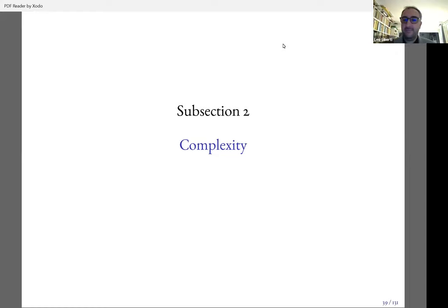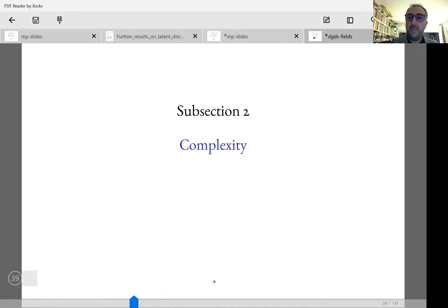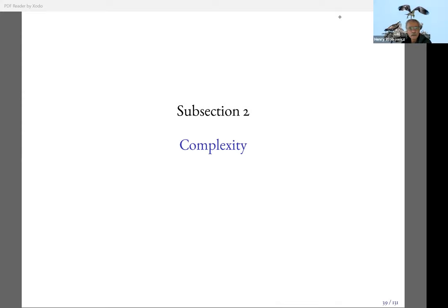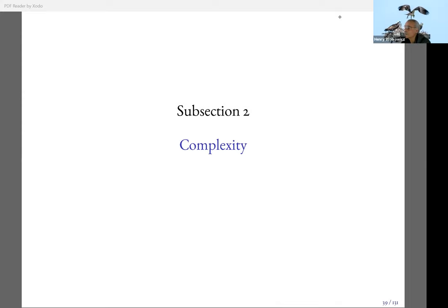Thank you very much. So you actually left a few minutes for questions. There were a couple of questions in the chat. One specific question was about the centering matrix J — is it orthogonal? It is an orthogonal projection — specifically, it's the orthogonal projection onto the orthogonal complement of the all-ones vector. It's the identity minus one over N times the all-ones matrix.